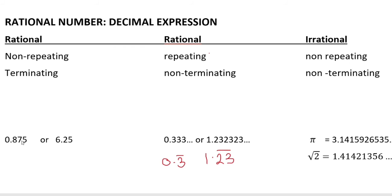For example, 0.875. This decimal does not repeat — it terminates. The number 0.875 is a terminating decimal, and the number ends there. This is a terminating decimal.